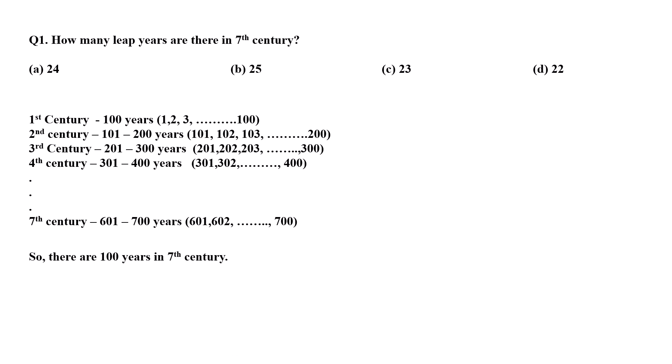Now you have to find out in 100 years how many leap years will be there. To find out the leap year you have to divide it by 4. If you divide it you will get 25. But if you see 601 to 700, 700 is not a leap year.